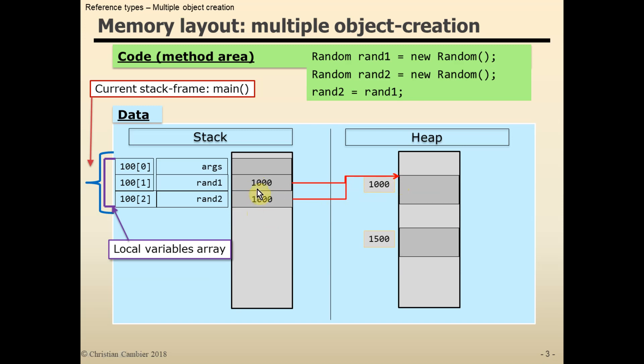So both reference variables now refer to the same object. Note that any reference to the second object at address 1500 is now lost. This object will in due time be freed from memory by the garbage collector.